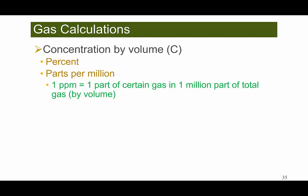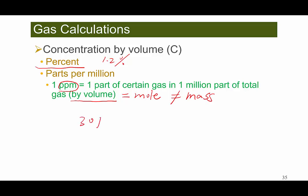Let's talk about some basic things we need to know before we go into the gas make. When doing gas calculations, most of the time we use gas concentration. It can be in percent, say 1.2% of CO2. Sometimes if the concentration is low, we use parts per million. One part per million is one part of a certain gas in one million parts of total gas — this is by volume, which equals by mole, but it is not equal to by mass. By default, if we say 30 ppm without specifying, it is by volume.